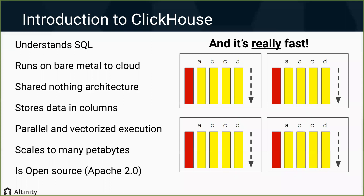ClickHouse scales to many petabytes — from a six-year-old Dell laptop all the way up to clusters with hundreds of nodes and tens of petabytes of data. The thing that really attracts people more than anything else is that it's fast. The columnar storage, the fact that everything's a sequential read and write, and a wealth of performance optimizations are what really grabs people's attention. And that's what we're going to be talking about today — how to make it even faster.